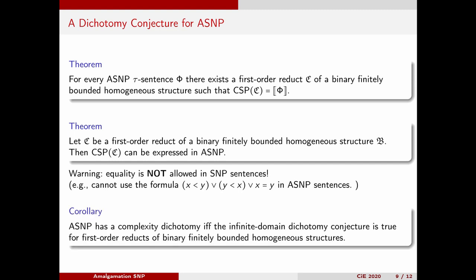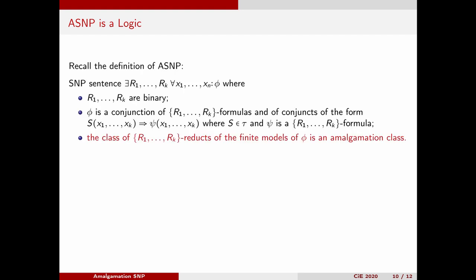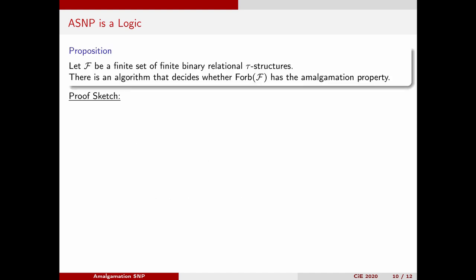As a corollary, we obtain that amalgamation SNP has a complexity dichotomy if and only if the infinite domain dichotomy conjecture is true for first-order reducts of binary finitely bounded homogeneous structures. We still have to argue that amalgamation SNP is a logic. Recall the definition: the crucial place is the last item. How do we know whether the class defined there has the amalgamation property? If the syntax of amalgamation SNP is to be decidable, we need to effectively decide this question. And indeed, we present an algorithm for this task.